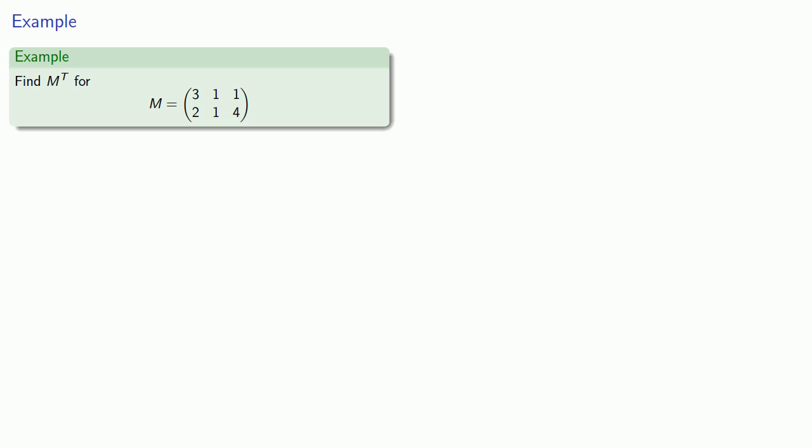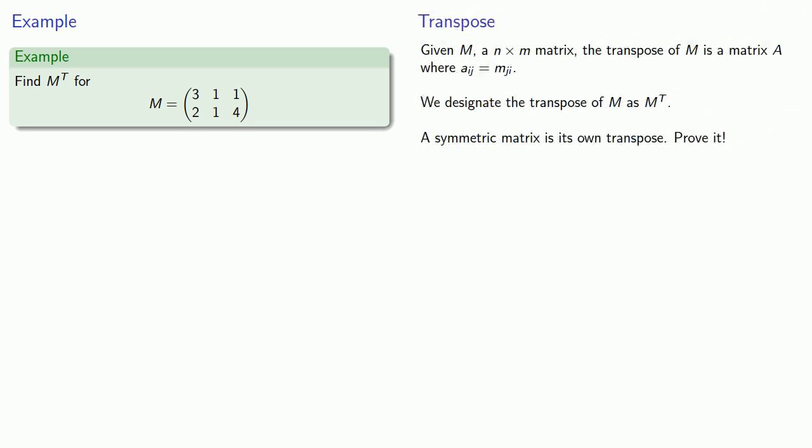If we have M, a N by M matrix, the transpose of M is a matrix A, where Aij is equal to Mji. We designate this transpose as Mt. For example, suppose I have the matrix shown, let's find its transpose. Now, while we define the entries of the transpose in terms of the entries of the original matrix, it's easier in math and in life to identify where we've come from before we think about where we're going.